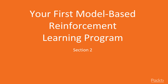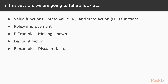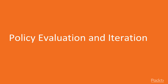This section is entitled 'Your First Model-Based Reinforcement Learning Program.' In this section, we will first take a closer look at the value functions — the state value function and the state action function. Then we'll look at the process of policy improvement for model-based iterative policy evaluation and improvement. We'll launch into an R example of a model-based MDP, take a closer look at the discount factor, and look at another R example that utilizes the discount factor.